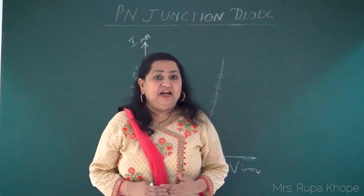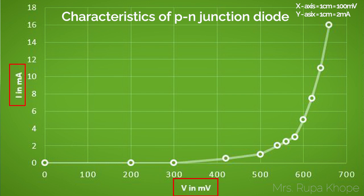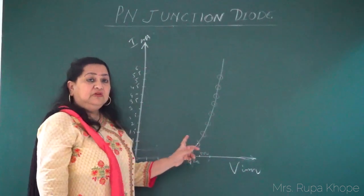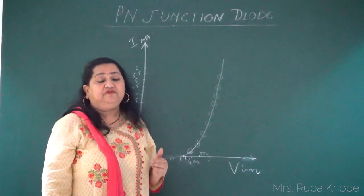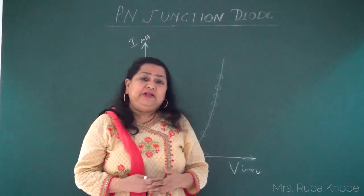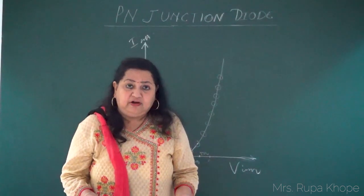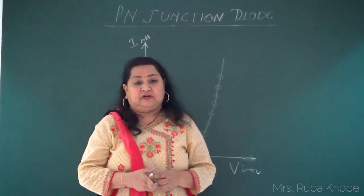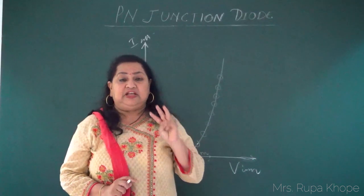Now we will start drawing the graph — the I-V characteristic, that is, current versus voltage. You can see the current on one axis and voltage on the other. From our observations, when it was 420 millivolts the current shown was 0.5 milliamps. But this does not mean there is no current before that voltage; we may get current at 400 millivolts too, because the least count of the milliammeter itself is 0.5 milliamps.